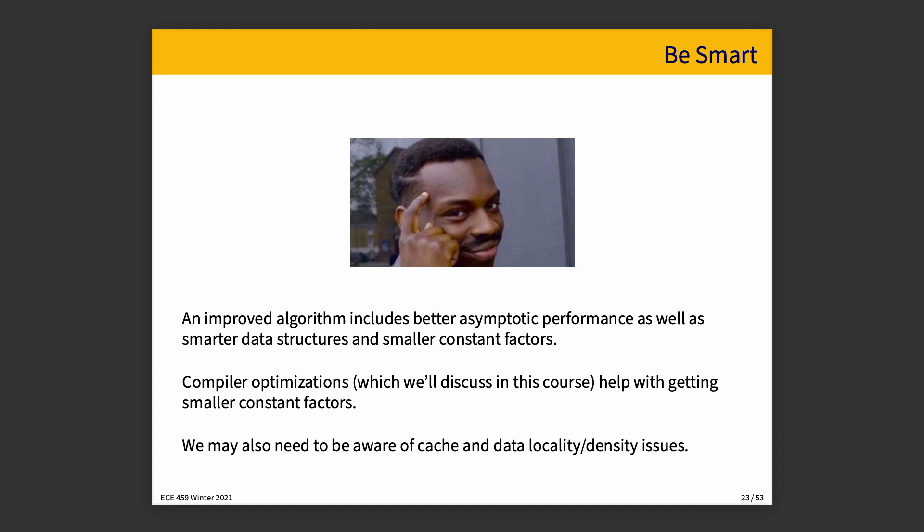The strategy 'be smarter' includes obvious things: if you use a better algorithm, it has better asymptotic performance. As the number of elements in the collection grows, a better algorithm gives you more benefit. There are also constant factors — things that don't change with the number of elements, but count in terms of how long it actually takes. Compiler optimizations, which we will talk about in this course, improve the constant factors. More complicated considerations include cache — what data is in cache, data locality — what data is located near other data, and density issues: how tightly can we pack data into a given amount of memory?